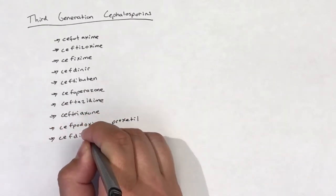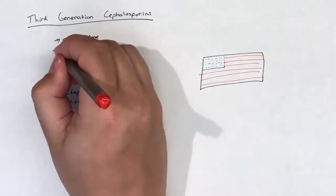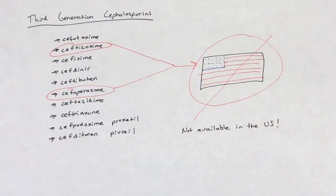Additional drugs include cefoperazone, ceftazidime, ceftriaxone, cefpodoxime proxetil, and ceftaroline pivoxil. Ceftizoxime and cefoperazone are not available in the United States.